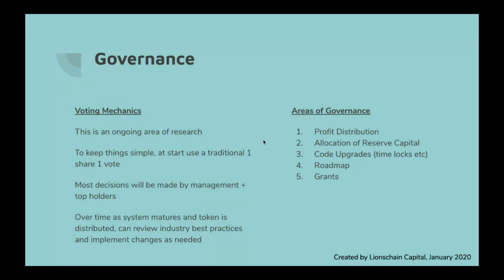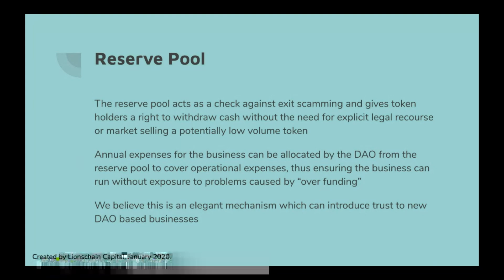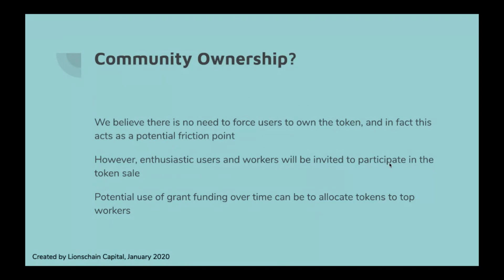Governance areas will revolve around profit distribution, allocation of reserve capital, code upgrades such as time locks, roadmaps, and grant applications. The reserve pool acts as a check and balance against exit scamming from founders, and gives token holders the right to withdraw cash without explicit legal recourse or market selling of a potentially low-volume token. Investors can always burn their Network Equity Token to rage quit from the reserve pool — a mechanism we learned from MolochDAO, which we believe introduces trust to a new DAO-based business model.